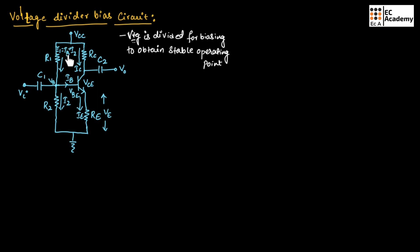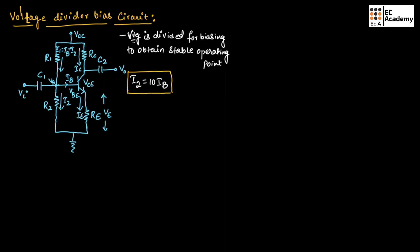Here, I1 will be equal to Ib plus I2. Capacitors C1 and C2 are connected across the input as well as the output. These capacitors are known as coupling capacitors, which allow only the AC signal to pass through the device — they block the DC signal and pass only the AC signal. You need to remember that I2 will be equal to 10 times Ib, which is very important for biasing.